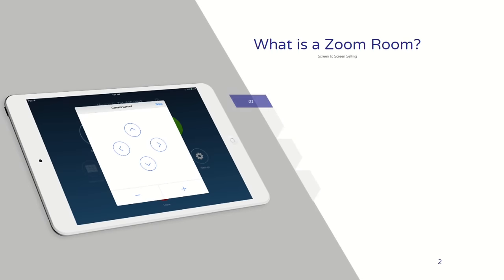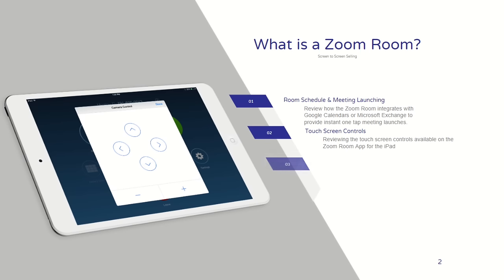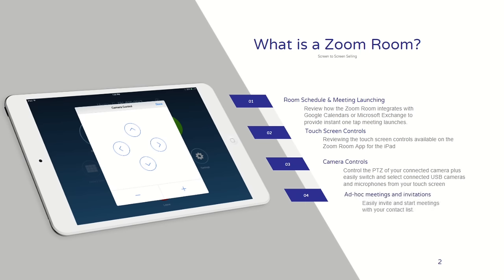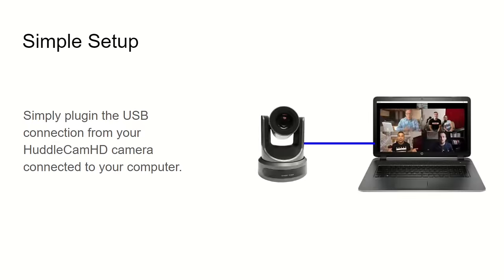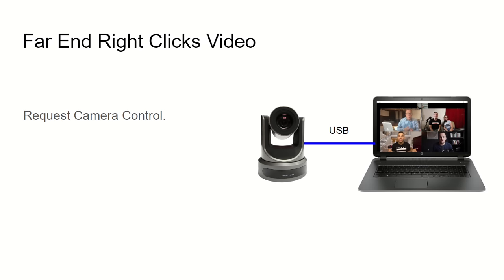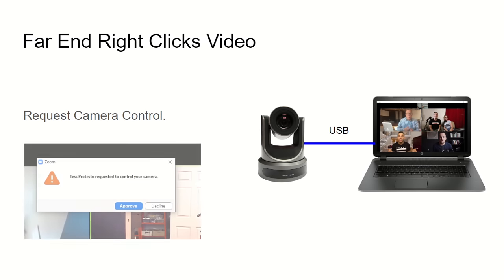This is what the Zoom Room iPad looks like — it gives you great touchscreen controls for camera pan, tilt, and zoom functionality. This is super simple to set up: you just plug in a USB connection directly to your computer from your USB connected PTZ Optics camera.